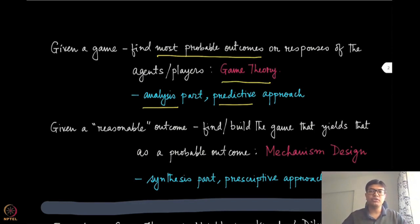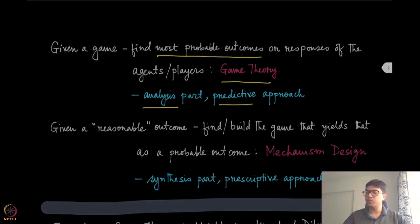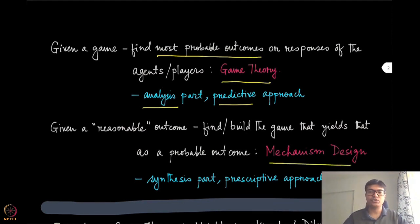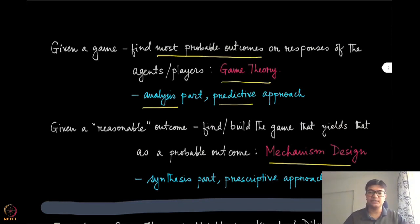Now if we take the inverse approach — where we want a specific reasonable outcome and we want to find or build the game that yields those kinds of desirable outcomes as the probable outcomes, as defined in the game theory part — that type of approach we will be calling mechanism design.